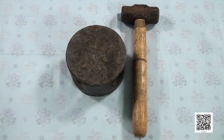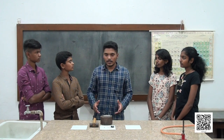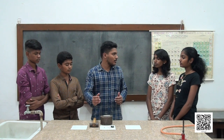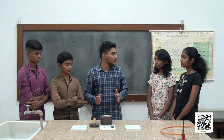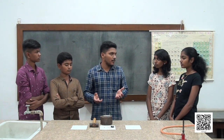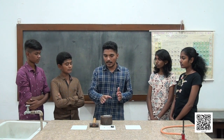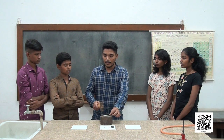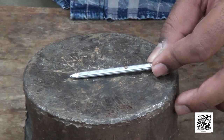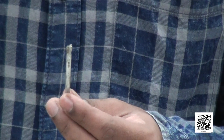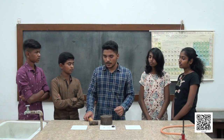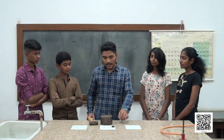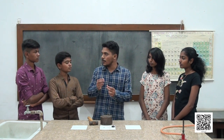Observe what happens to these materials when hammered. In this activity, you have to identify which materials will become flat and which will remain as such or break. If I hit this iron nail — as you have seen at home — it becomes flat. The flattening property of a material is known as malleability. This is an exclusive property of a metal.